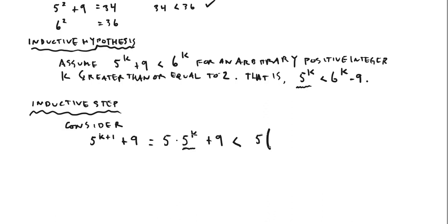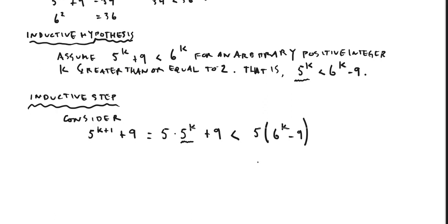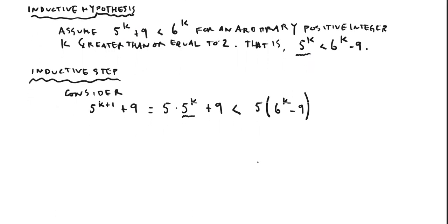So let me make that substitution. I'm going to have 5 times — making the substitution for 5 to the k — right, 6 to the k minus 9. The first thing we notice that's different here is that instead of making substitutions that are directly equal, we've made a substitution that yields a quantity which is greater than the previous quantity, because that's the relationship given to us in the inductive hypothesis.